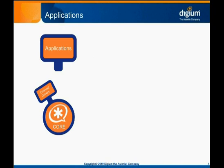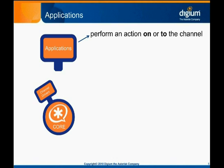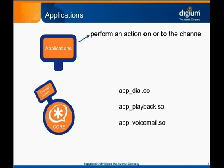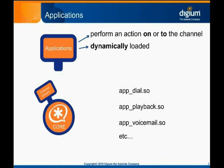Applications are Asterisk modules used for dial plan processing. The actual routing of calls within the dial plan happens in PBX core modules, but the various actions calls take, or actions done to calls, are implemented in applications. Applications implement units of functionality within the system. Dialing an extension, playing an audio file to a caller, and recording a voicemail message are all examples of functionality provided by Asterisk applications. There are over a hundred dial plan applications natively available in Asterisk, and many more provided by third parties. Each application module is dynamically loaded by the core when needed, and most applications live in a file similar to the name app_dial. App_playback and app_voicemail are the files containing the applications used as examples.